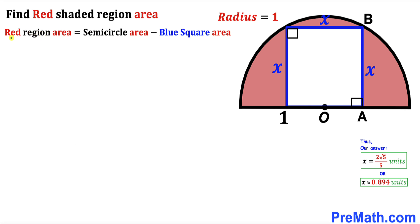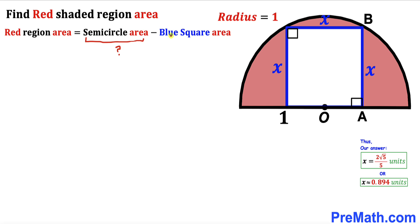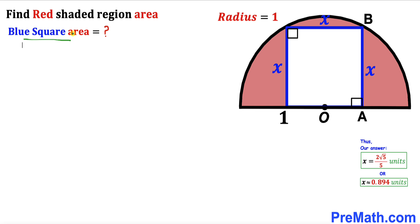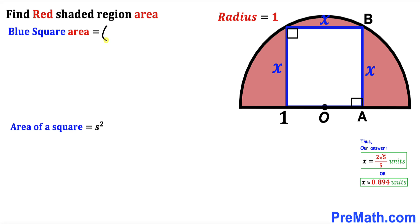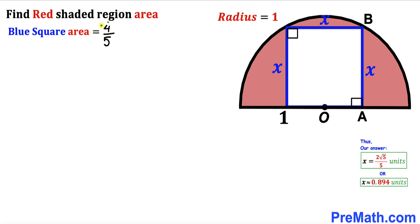Now let's observe that the red region area equals the area of the semicircle minus the area of the blue square. So our task is to calculate both. For the blue square, the area formula is S², where S is the side length. Our side length X is 2√5/5, so the blue square area is (2√5/5)² = 4/5.